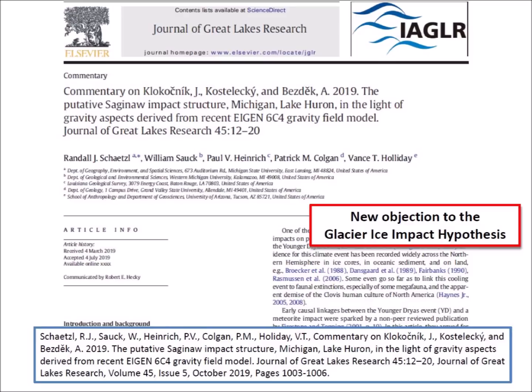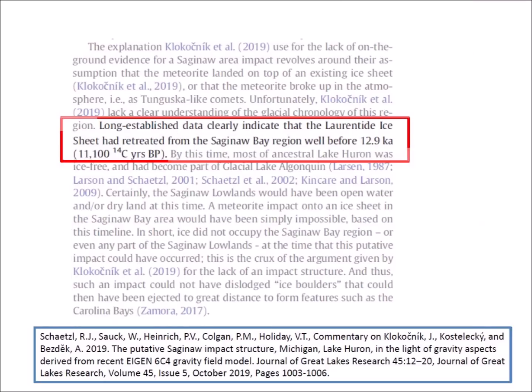The matter of the missing ice was brought up again in 2019 when Professor Schetzel from Michigan State University and four co-authors wrote a commentary about a paper by Klokoshnik et al., objecting to claims that there is evidence that an impact occurred in southern Michigan near Saginaw Bay at the end of the Pleistocene. The commentary questioned the methodology used for the gravity model that supported an impact in the Saginaw Bay area. The same issue of the journal contained a reply by Klokoshnik et al. defending their methodology and clarifying that they did not originate the hypothesis about the impact. The commentary by Schetzel also refuted the impact hypothesis based on geology, stating that long-established data clearly indicate that the Laurentide Ice Sheet had retreated from the Saginaw Bay region well before 12,900 years ago, or 11,100 radiocarbon years before the present.